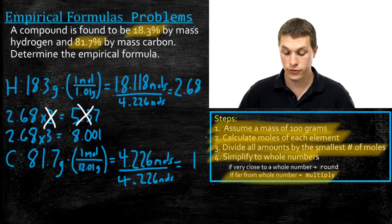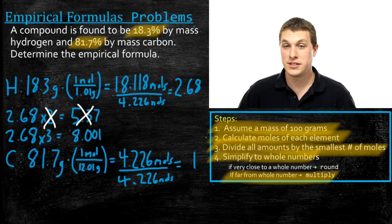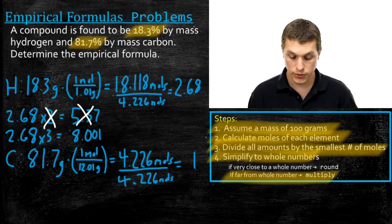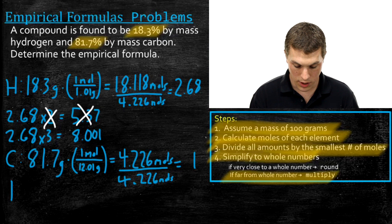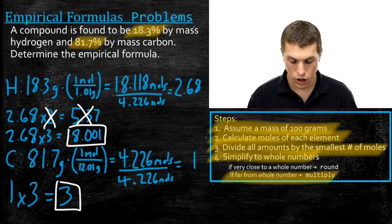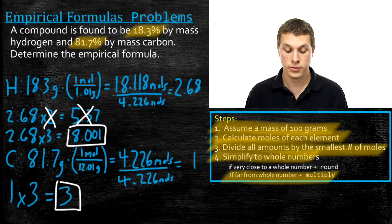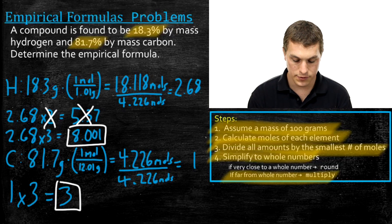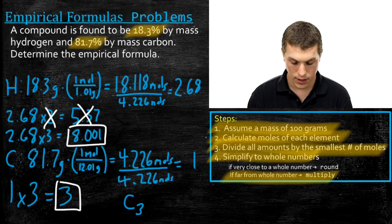Our math originally gave us a ratio of 2.68 hydrogens for every one carbon. Since we can't have half a hydrogen atom, we multiply both values by 3 to get whole numbers. 2.68 times 3 rounds to 8 for hydrogen, and 1 times 3 gives 3 for carbon. So we have 8 hydrogens for every 3 carbons, giving us the empirical formula C3H8.